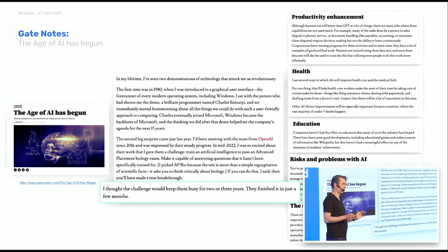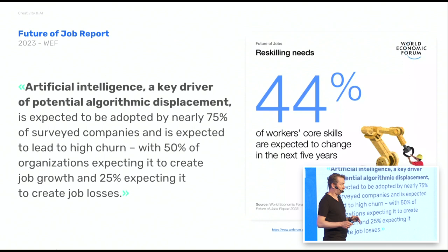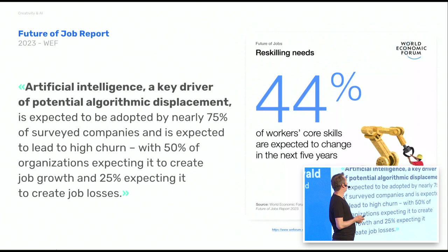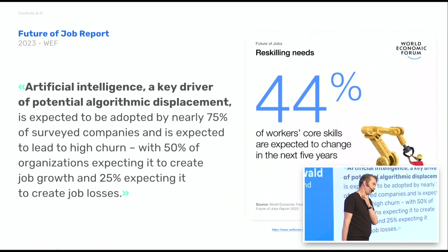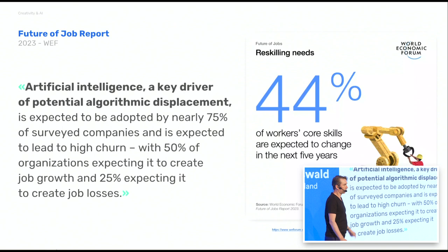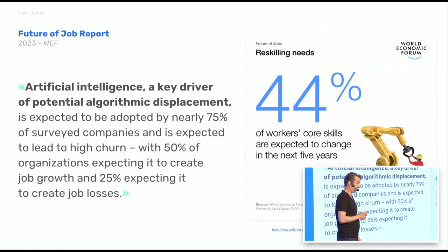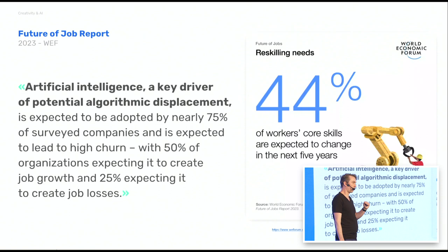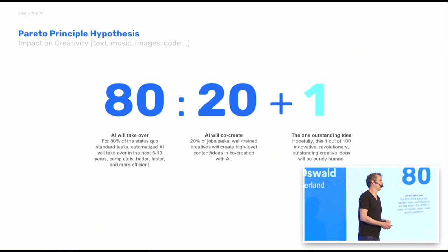The Pandora's box is open and we cannot close our eyes. As we figured out in the talk before, we have to deal with it and improve it. Going down to our daily jobs, there is the Future of Jobs report from the World Economic Forum that says within the next five years, 44% of workers will have to renew their core skills, and one of the drivers is artificial intelligence. And I've talked to a lot of people — nobody wants to make a prediction further than five years. Five years is the maximum.